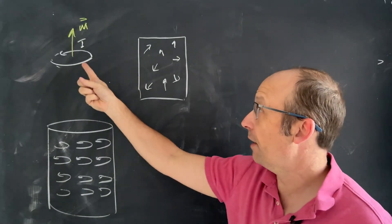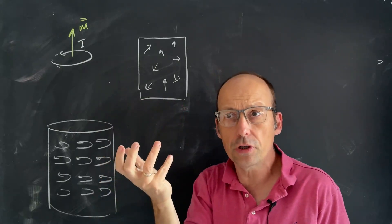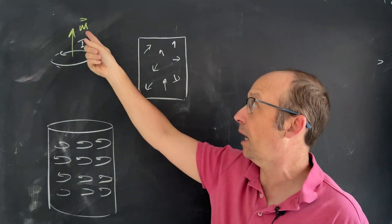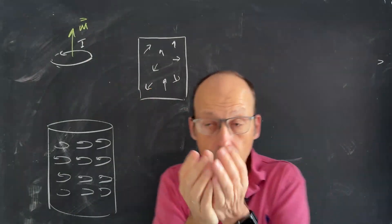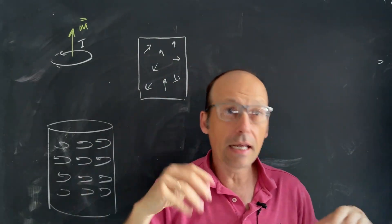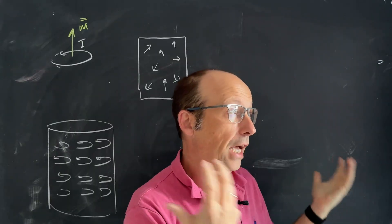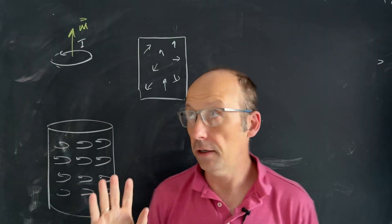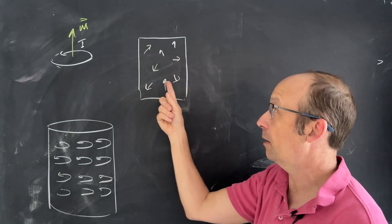Remember that if I have a loop of current or any kind of current distribution, I can describe that with a magnetic dipole moment M. If you have a material, those magnetic dipole moments are due to electron spin and electron orbits — quote, orbits — in the material. So some materials have different magnetic properties.